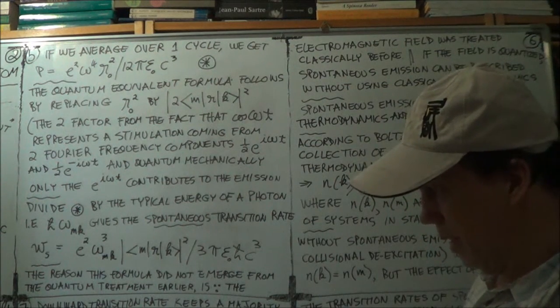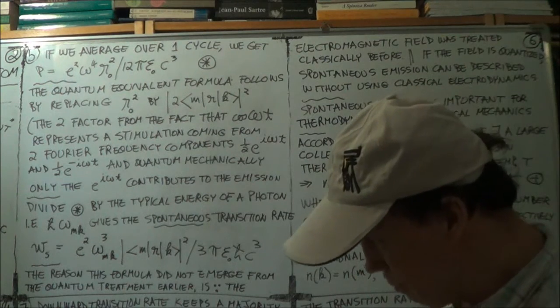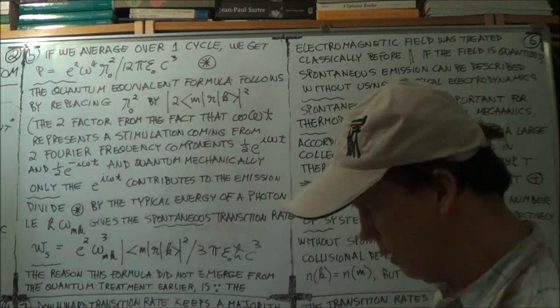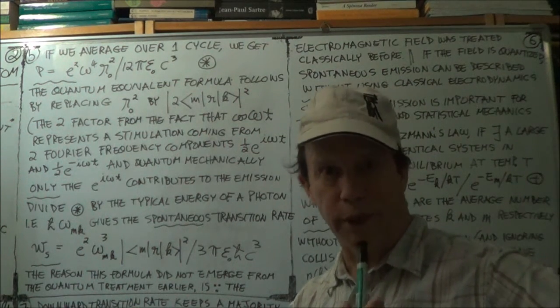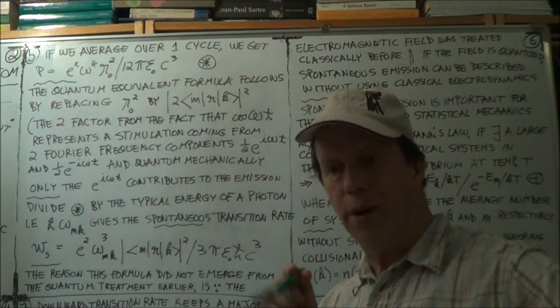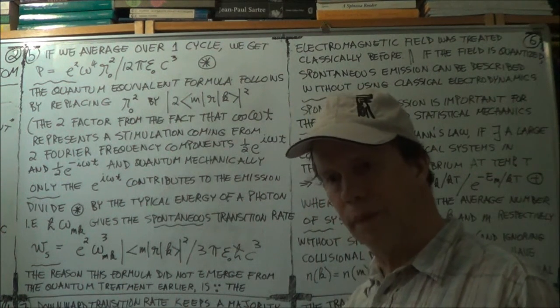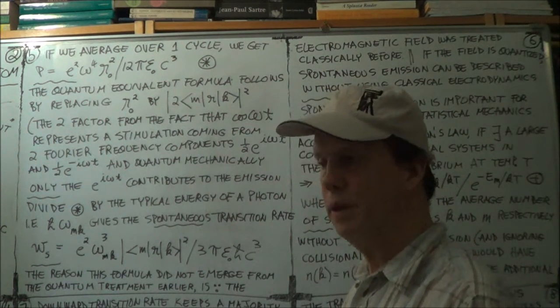From the end of the previous session, we had Larmor, L-A-R-M-O-R, Larmor's formula in classical electrodynamics that gives you the power of the radiation being emitted in all directions. So the energy per unit time being emitted.